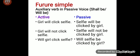Then: Will girl click selfie? This is an interrogative sentence of future simple. Let us convert it into passive. The auxiliary verb will comes first in interrogative form. So the passive form is: Will selfie be clicked by girl? — with a question mark at the end.